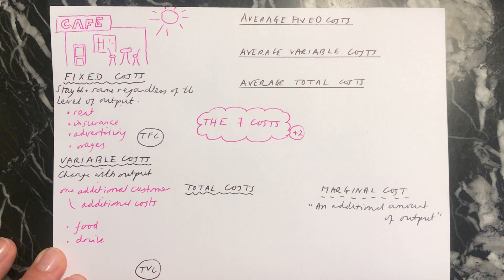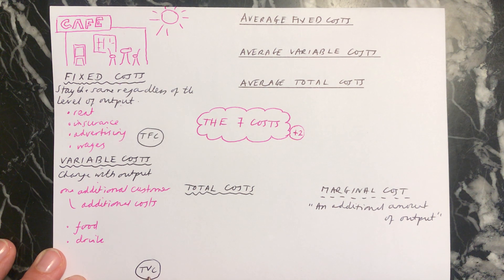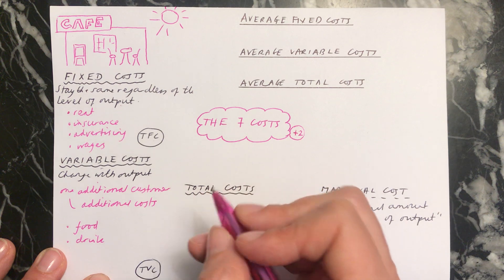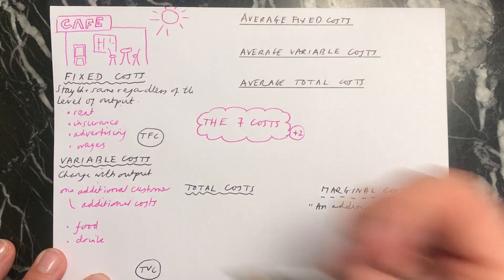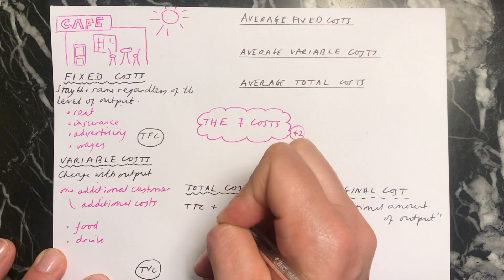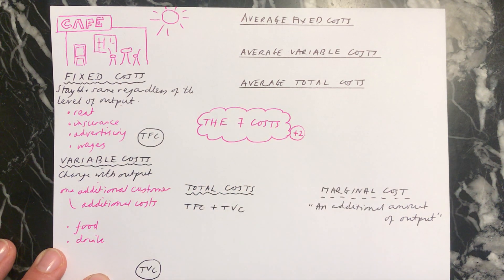If you want to know what your total variable costs are, you look at what they are at the level of output that you are producing. So if you have 10 customers, you find out what your variable costs are for each customer and add them together to get your total variable costs. Next is total costs, and this is just your total fixed costs plus your total variable costs — that's how you work out your total costs.